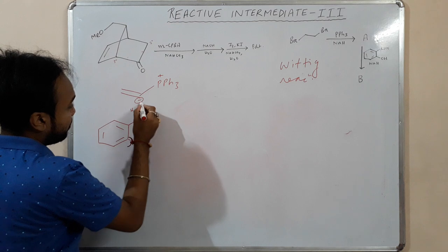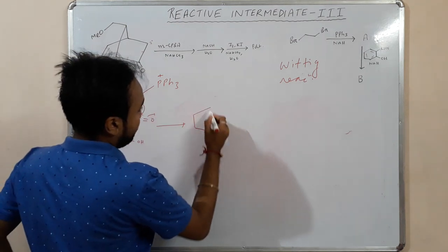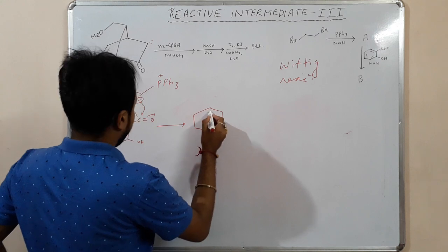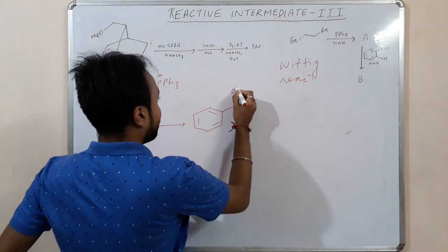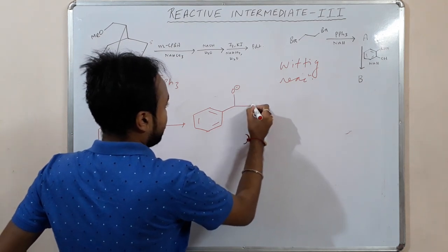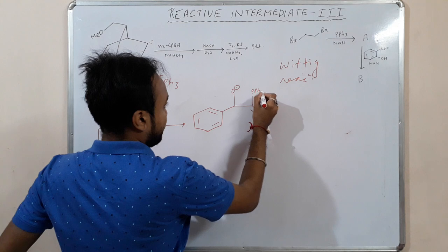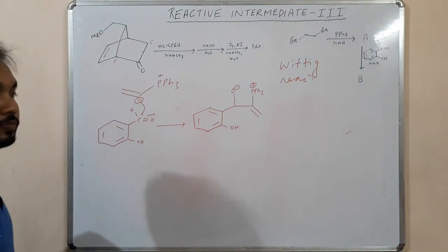So this is our ylide. It will attack here. We will go here. So we have a carbon, this is O minus, this is PPh3 plus, then we have OH.